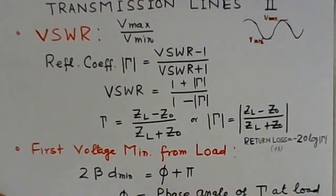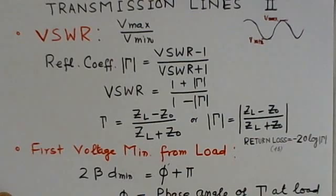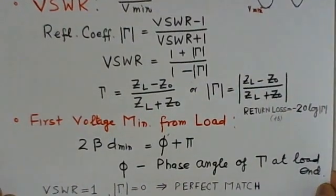By observing the first voltage minimum from the load, you can always find the phase part of the reflection coefficient. The relation is twice beta, the phase constant, d_min, equals to phi plus pi, where phi is the phase angle of gamma at the load end. By knowing the minimum distance, first distance of first minimum from the load, you can always determine the value for the phase part of the gamma. Phi could always be determined from this relation. This is one of the very important relations which exists on the transmission lines.